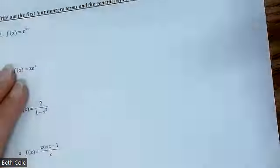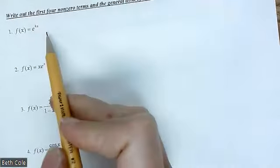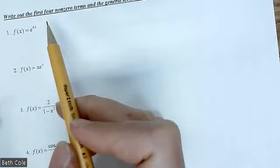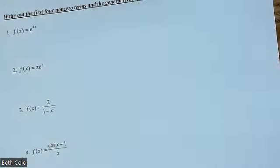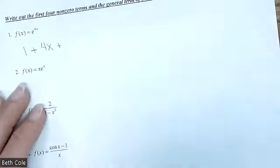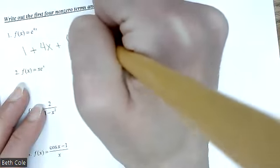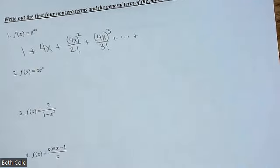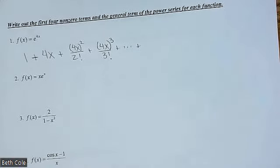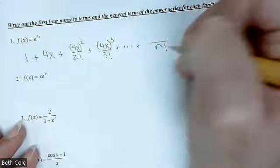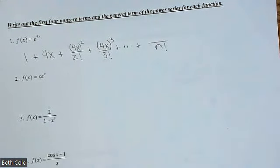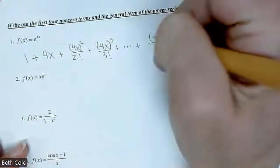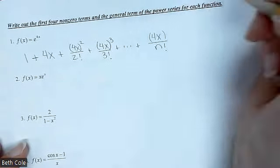Write out the first four non-zero terms and the general term. You're going to look at e to the x — everywhere there's an x, replace it with 4x. The first term is just 1. Then 1 plus 4x, plus 4x squared over 2 factorial, plus 4x cubed over 3 factorial. You could reduce that down if you wanted, but it's not necessary. For the general term: nothing alternates, denominator is still n factorial, numerator would be 4x to the n.